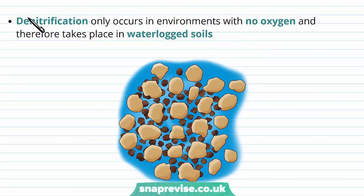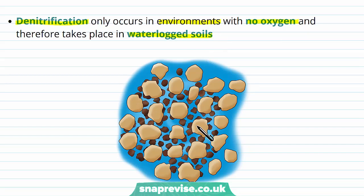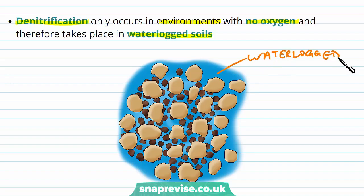Denitrification only occurs in environments with no oxygen, and therefore it tends to take place in very waterlogged soils. In this area of soil, you can see that the particles are separated but they're full of water — all of those spaces are taken up by water — which means that there's very little oxygen in this environment, and so they can carry out this process.